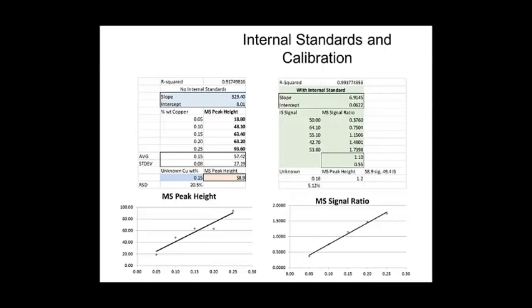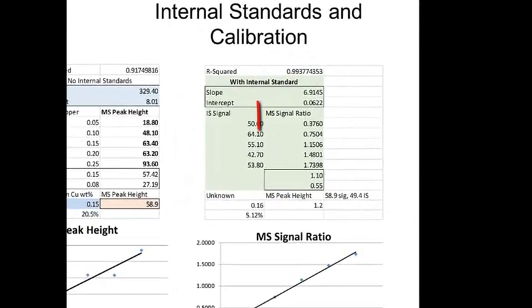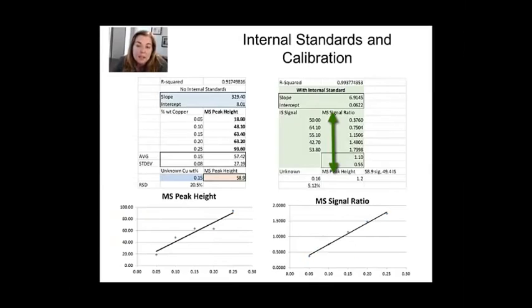So in this data set, what I've done is I've given you an internal standard signal. And that internal standard signal has now, so the thing that we're going to calibrate against is going to be the mass spec signal ratio for the weight percent copper divided by the internal standard signal that we got during the same experiment. So it's this new column of data that becomes our Y values that when you calibrate in this fashion, the RSD or the random error goes down substantially.